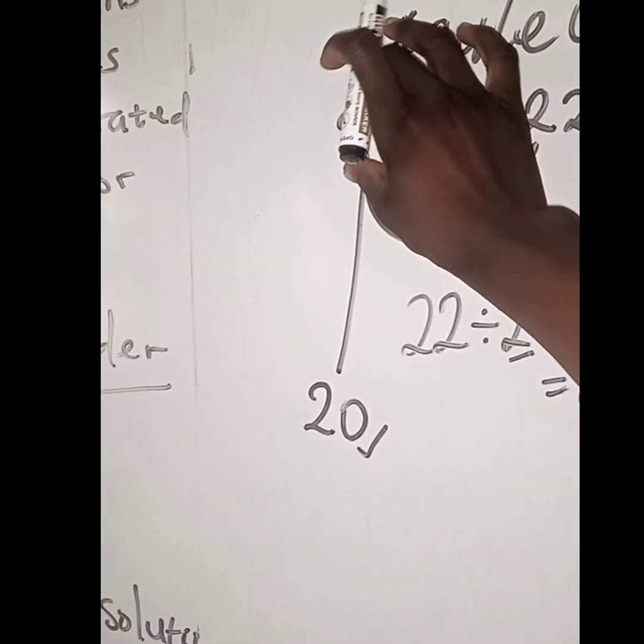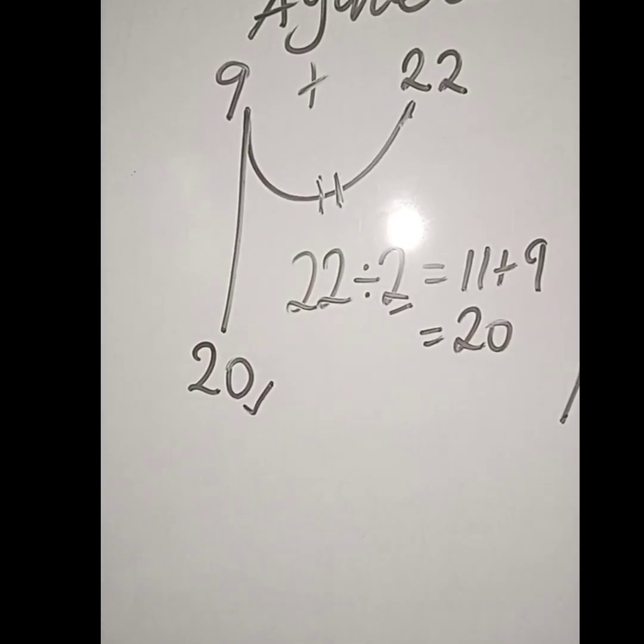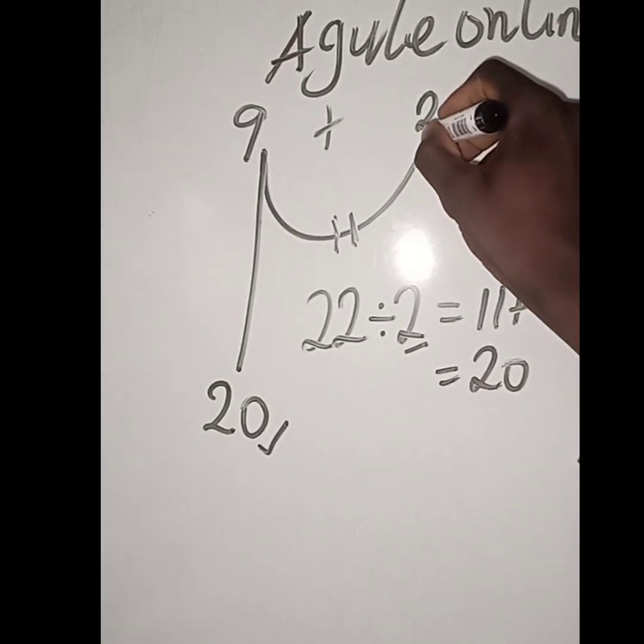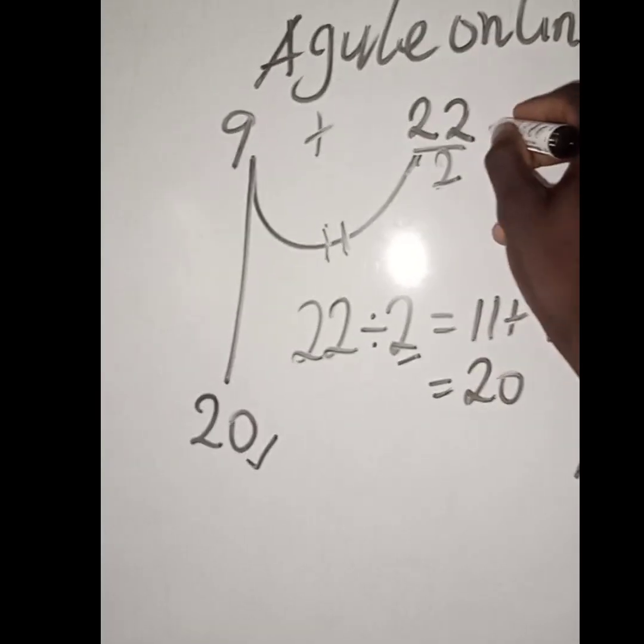If you want to get this 9, what are you going to do? It is very simple. Still divide 22 by 2. So if you divide 22 by 2, you are going to have 11.